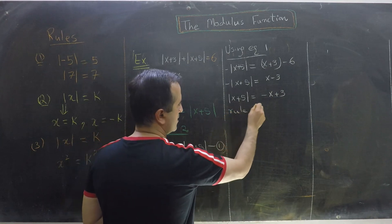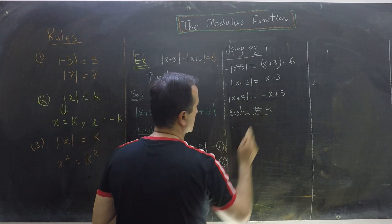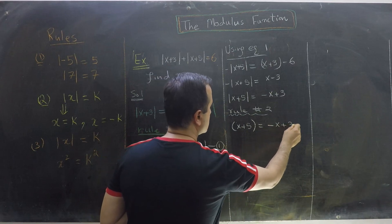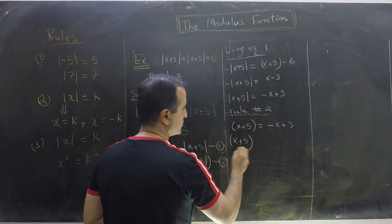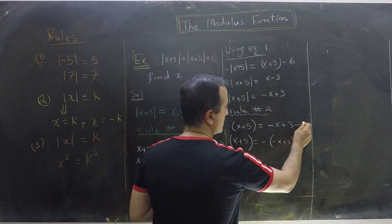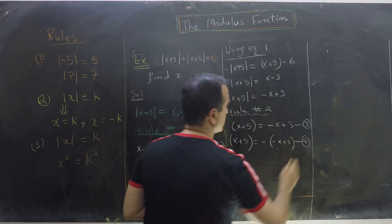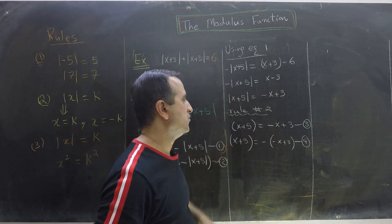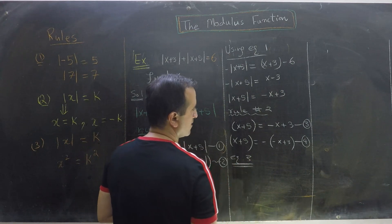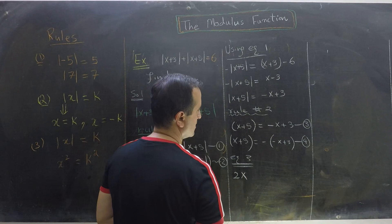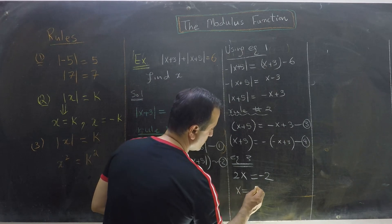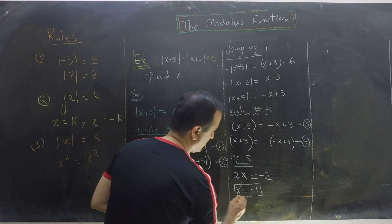Applying Rule Number 2 gives us: x plus 5 equals minus x plus 3 — this is Equation 3 — and x plus 5 equals minus of (minus x plus 3) — this is Equation 4. Using Equation 3: 2x equals minus 2, so x equals minus 1. That's the first possible value of x.